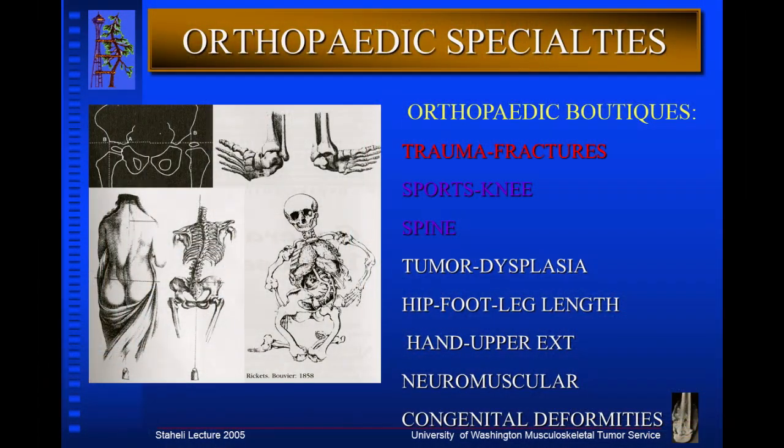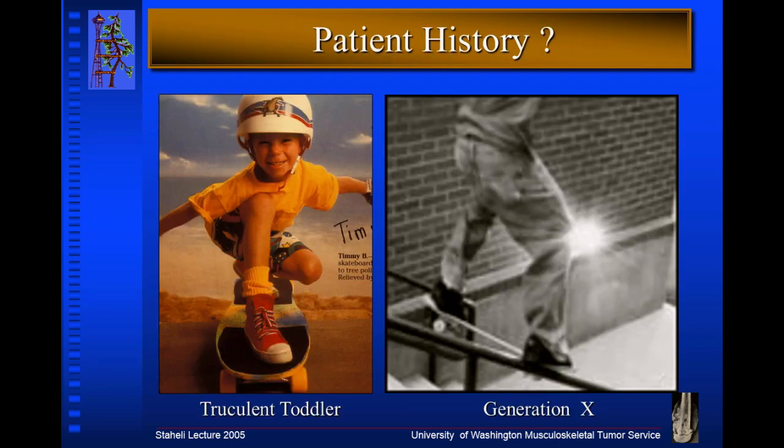I'd like to talk to you today about benign bone tumors in children. This is a really important topic because it's an extremely common diagnosis. If you look at all the things that we see in orthopedic clinic here at Children's, they range from birth disorders to problems of the spine, a huge fracture service and sports service, children with upper extremity, hip and knee problems, and congenital deformities.